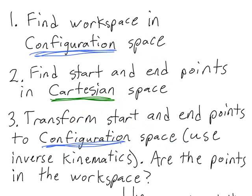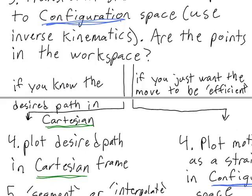I scroll back up to the top of our 7-step procedure for path planning and see that step number 1 is to find the workspace in configuration space. So I'm going to go back down to my spherical manipulator and find its workspace in configuration space.